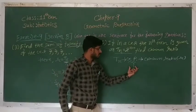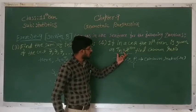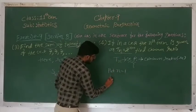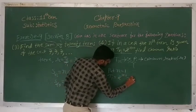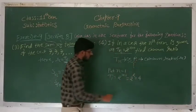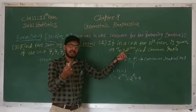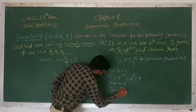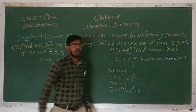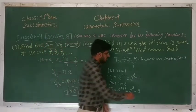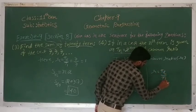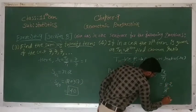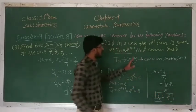To find the GP from t_n, put n = 1 to get the first term: t1 = 2^(1+1) = 2² = 4. Then put n = 2 to get the second term: t2 = 2^(2+1) = 2³ = 8. No need to find the third term. Common ratio R = t2 upon t1 = 8 upon 4 = 2. Therefore the common ratio of the GP is 2.